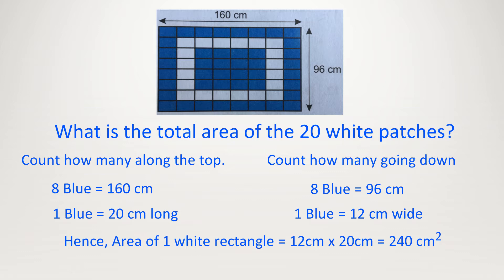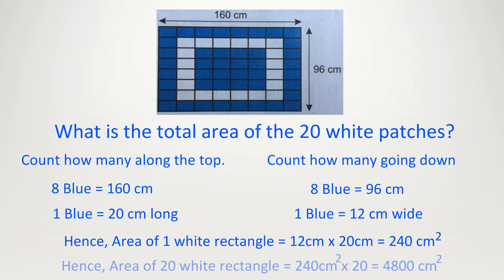But from the picture, what can we say about the blue and the white? They are the same. So 1 area equals 240. So 20 white patches equals 240 times 20. A nice way to do this is 24 times 2 equals 48, then times 10 times 10, so 48 times 100 equals 4800 centimeters squared.